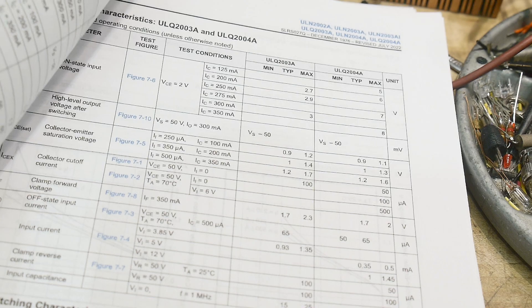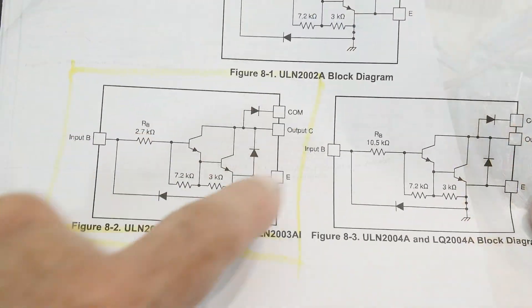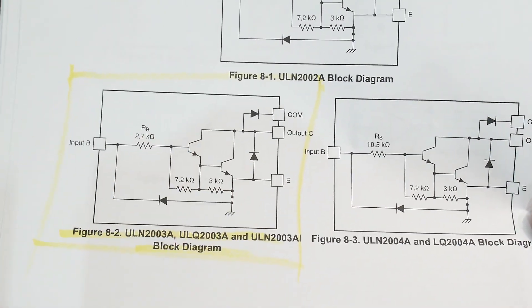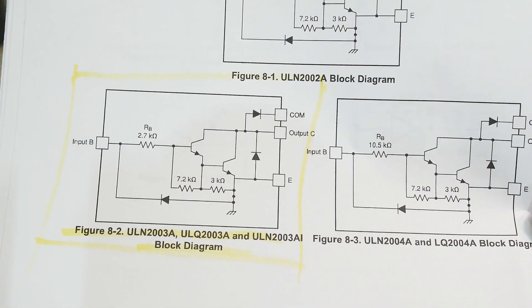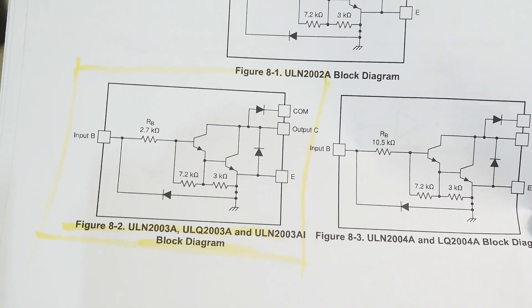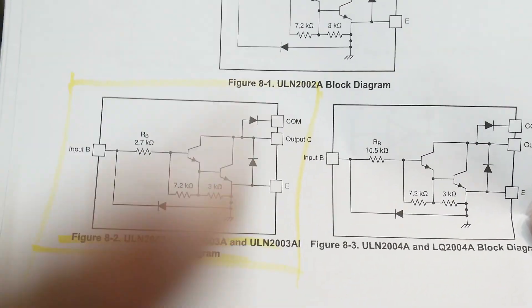Let me show you a schematic of this thing. So this is the one that we have. It's basically a Darlington transistor pair with some biasing resistors on it. And that's it. There's really no logic in there or anything like that. It's just these two transistors.